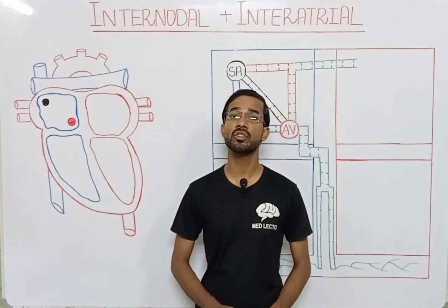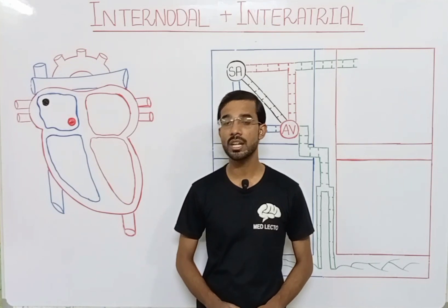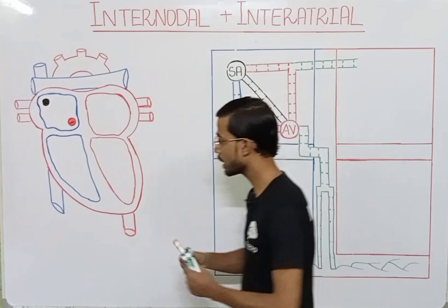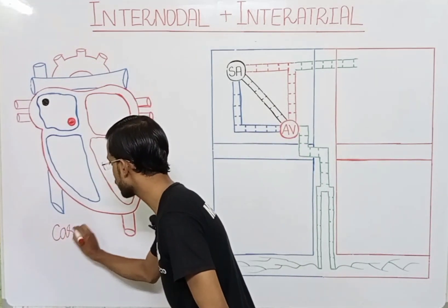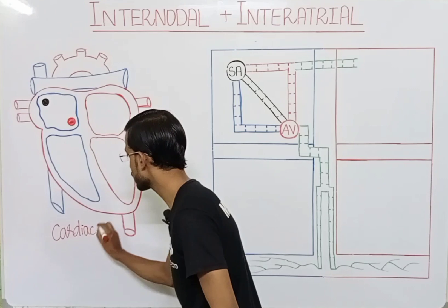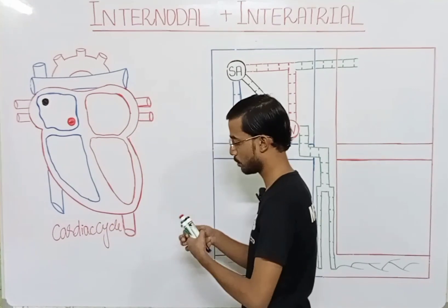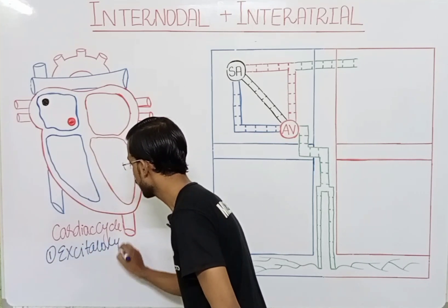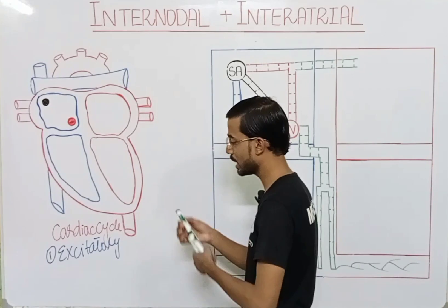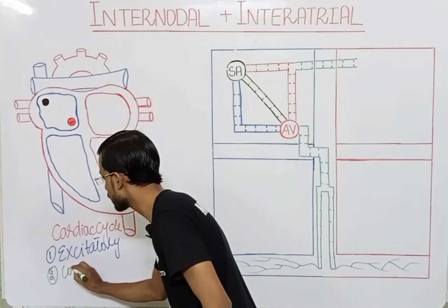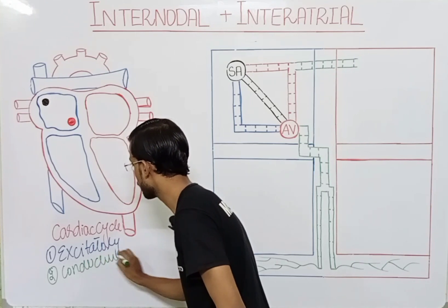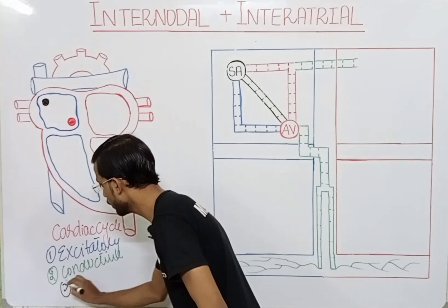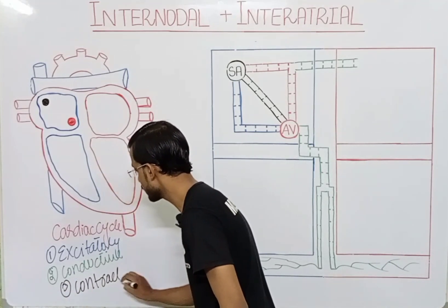In the cardiac cycle, you will see three most important systems: the excitatory system, the conductive system, and the contractile system.